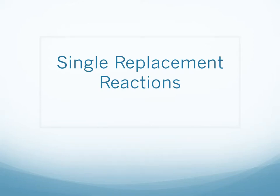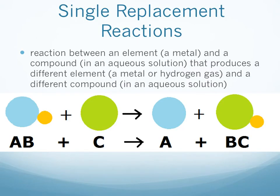In this lesson, we are going to predict the products for single replacement reactions. A single replacement reaction is where an element and a compound react to produce a different element and a different compound. We're going to get more specific as to what those elements and compounds are. Usually our elements are going to be metals, and the replacement will be between the metal and a metal ion that's in the compound.